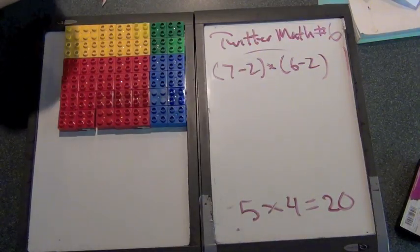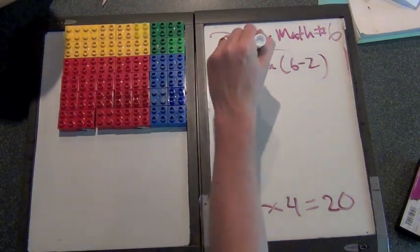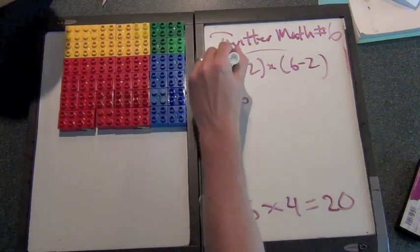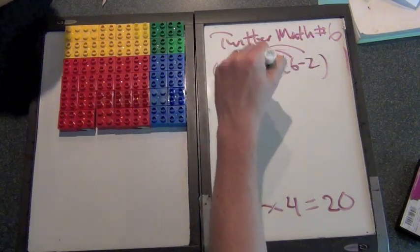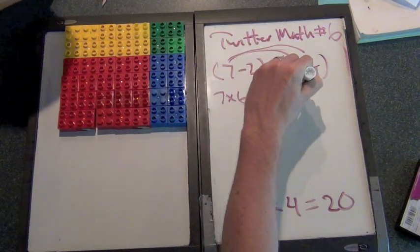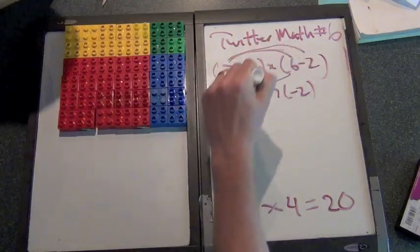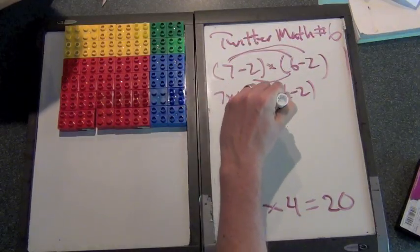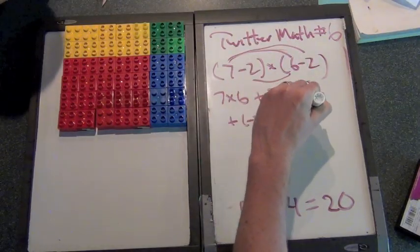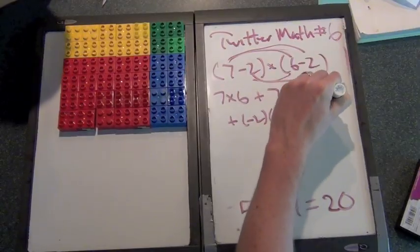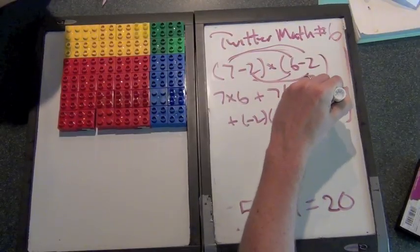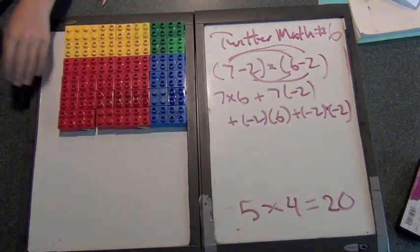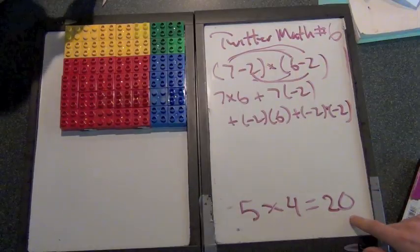Now, let's do the same thing we did before. Let's say this is seven times six, seven times minus two, minus two times six, plus, and then the last one minus two times minus two. Now, do you see a twenty anywhere here?